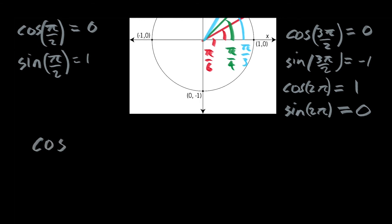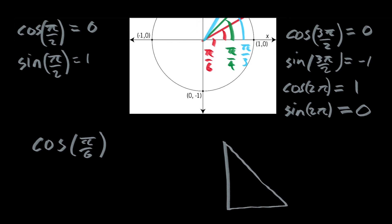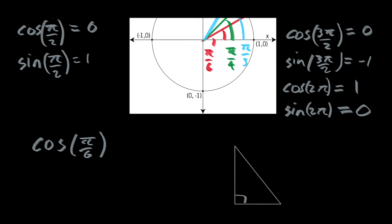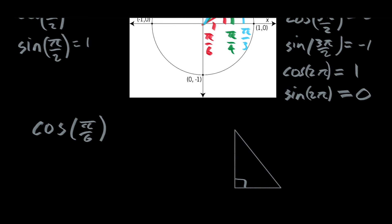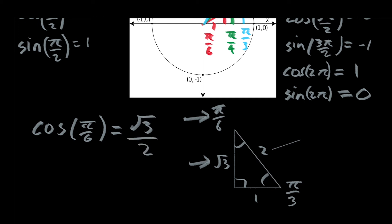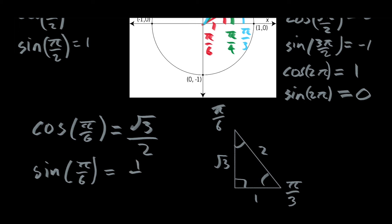To find the cosine of pi over six, I draw the special triangle that has an angle of pi over six. This angle is pi over three, this angle is pi over six. The side length is one, the hypotenuse has length two, and the remaining side has length root three. The cosine of pi over six is just adjacent over hypotenuse, so that's root three over two. The sine of pi over six is just the opposite side length over the hypotenuse, which is one half.